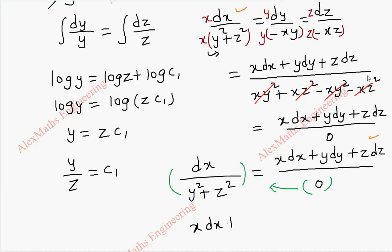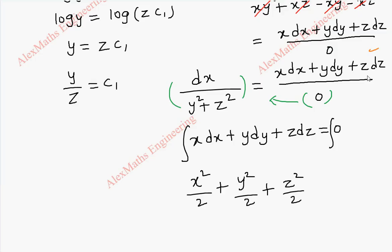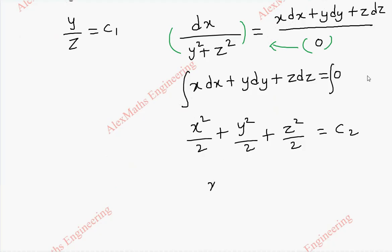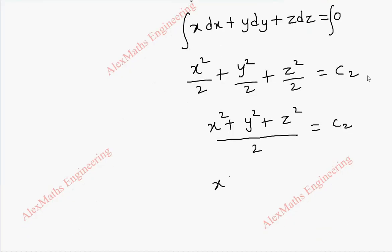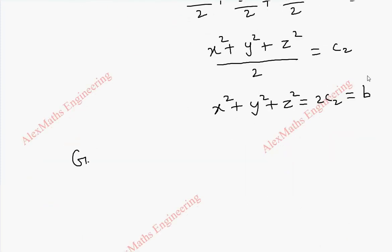We get x dx plus y dy plus z dz equal to zero, and we integrate this on both sides. This gives x square by 2 plus y square by 2 plus z square by 2 equal to constant c2. Taking LCM, x square plus y square plus z square divided by 2 is C2. From this, x square plus y square plus z square equal to 2C2. We take this as constant B and C1 as constant A.